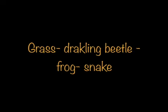A normal food chain consists of grass, then darkling beetle, then frog, then snake. A darkling beetle is in the first trophic level.